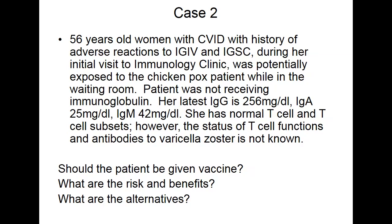Question: Due to newborn screening identifying babies with T cell lymphopenia and partial T cell defects, do you give MMR without first assessing T cell count or lymphocyte function? No — it is very important to assess T cell function before giving MMR, because even a significant severe immune deficiency may not be classical. If they do have immune deficiency, you don't want to give any live vaccine, because the risk outweighs the benefit.